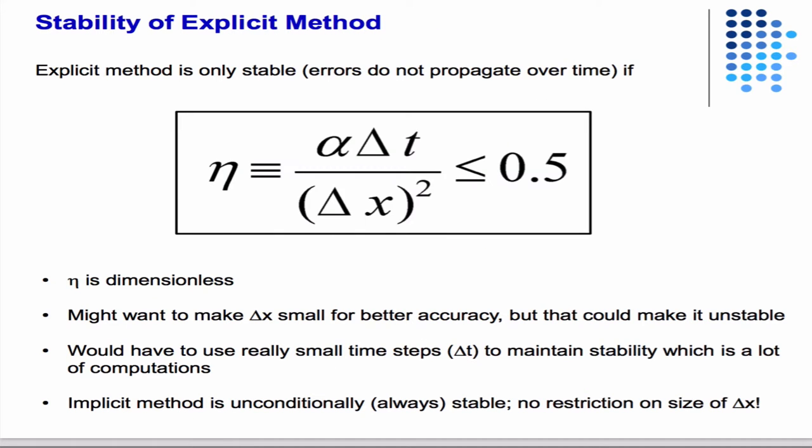The stability criterion for the explicit method is that eta, which is this constant, a dimensionless parameter, has to be less than or equal to half. Stability in numerics means the errors will not grow without bounds. Your simulation will not blow up.